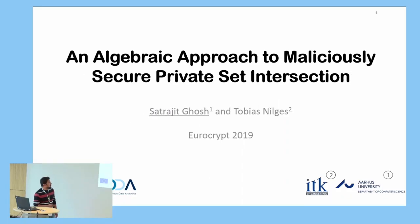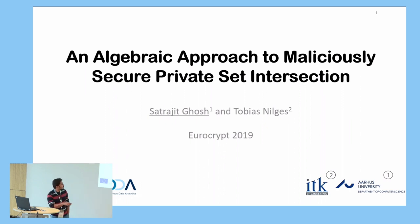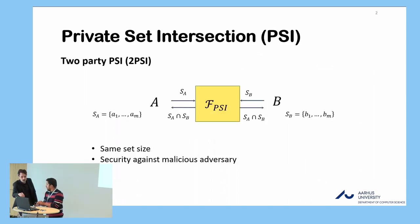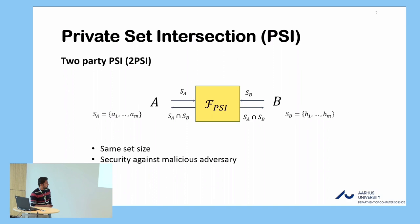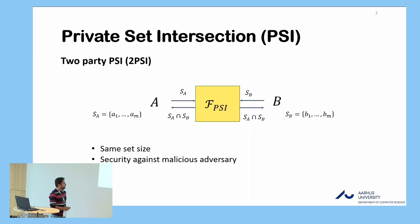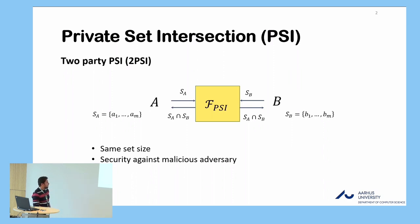I'm going to talk about Maliciously Secure Private Set Intersection. We are going to realize the functionality of PSI where both parties get the output of the protocol. So A and B have these sets SA and SB, and the functionality will give the intersection of SA and SB, nothing else, to both parties. We are in the setting where the set sizes are the same or similar — you can pad them to make them the same — and we consider security against a malicious adversary.